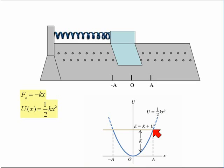The potential energy can never be greater than the total mechanical energy, so where the U and E graphs cross defines the maximum amplitude of the oscillation.